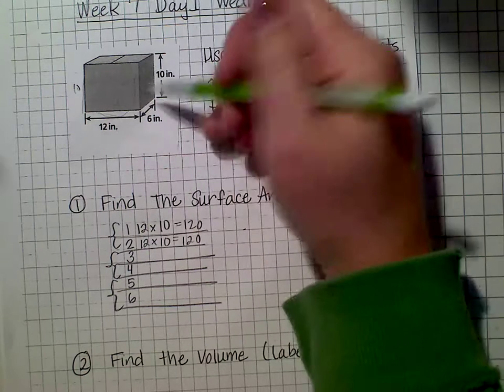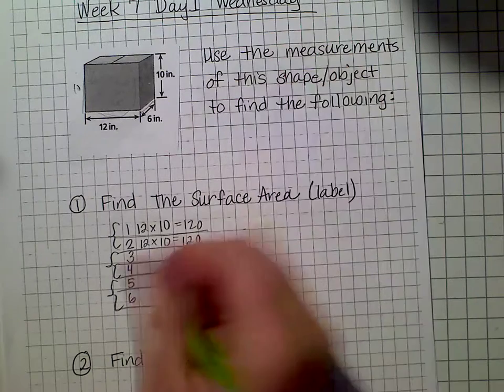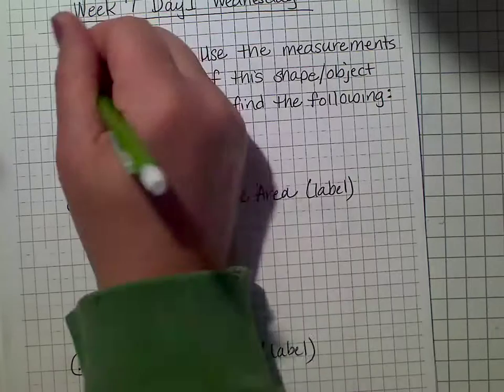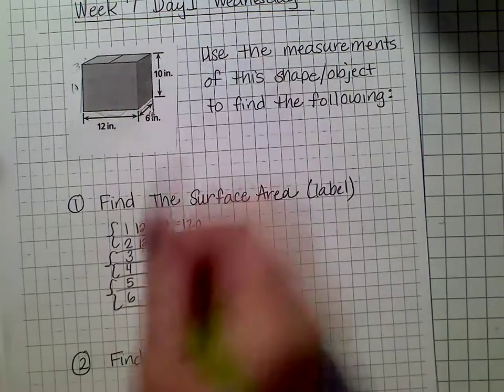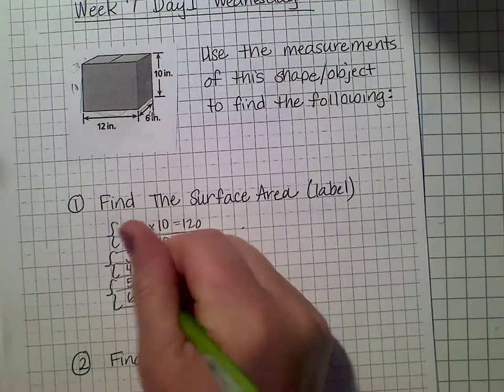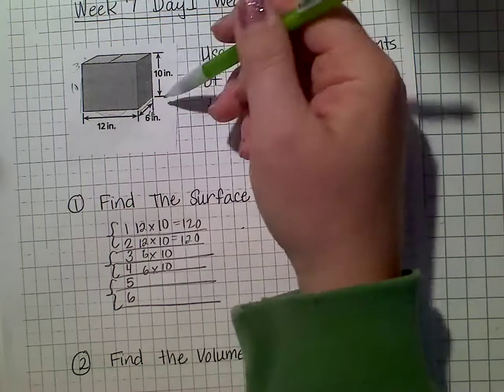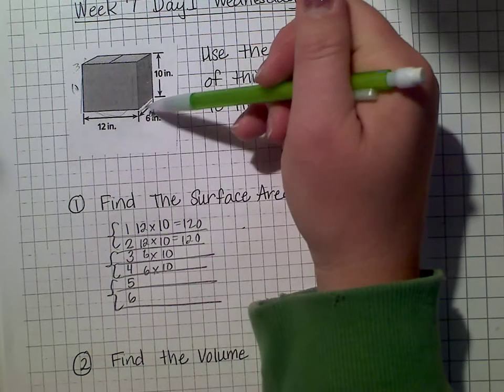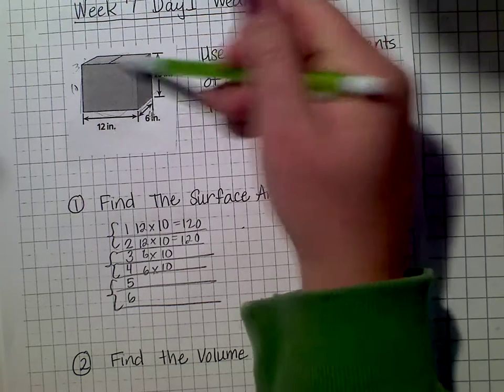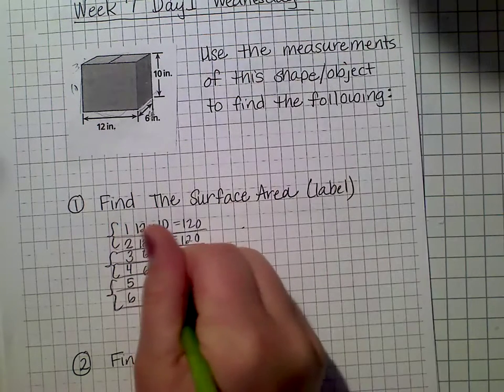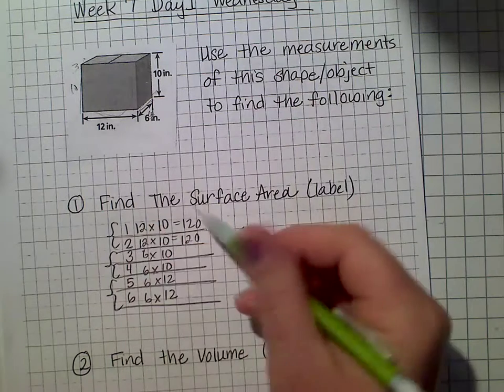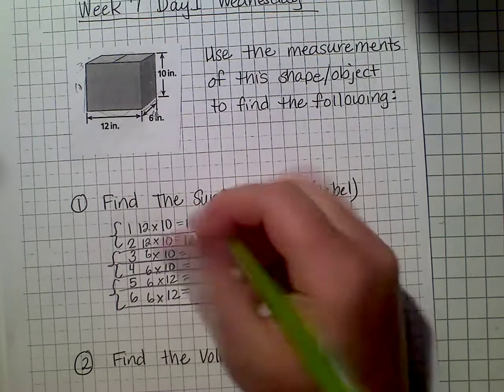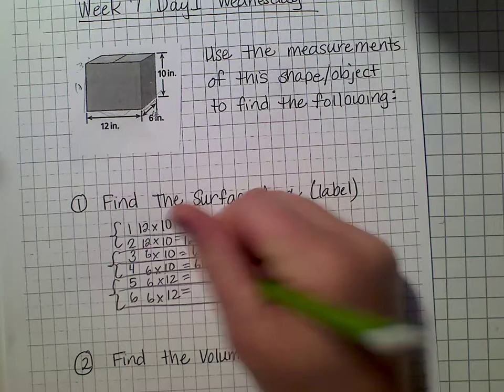Then, on this end, I have a 6 by 10. So I have two 6 by 10s, because that would be this side and that side. So this would be side 3, and this would be side 4. So 6 by 10, and 6 by 10, bless you. And then I also have a top one, a bottom and a top, which would be a 6 by 12. So this is the area of each side. So 6 times 10 is 60. 6 times 12 is 72.